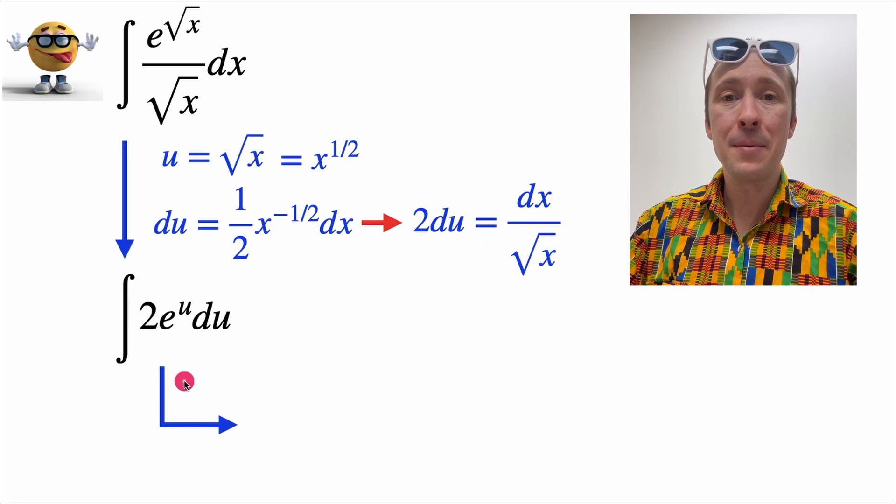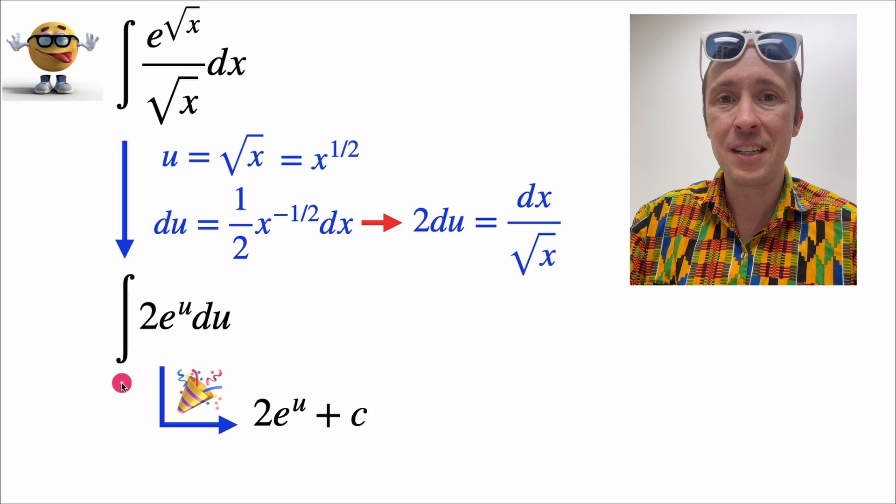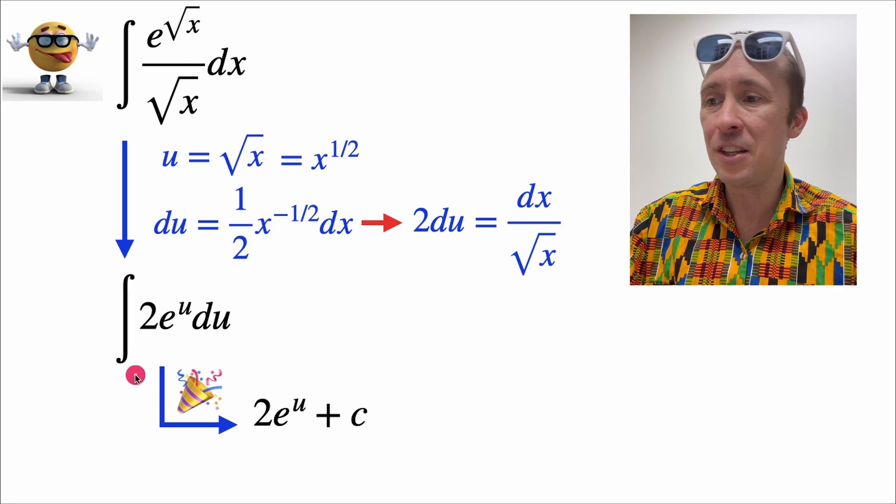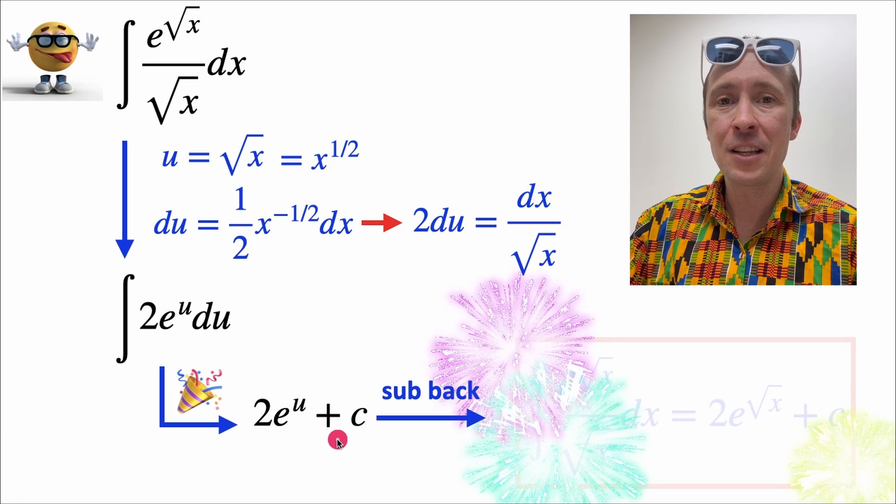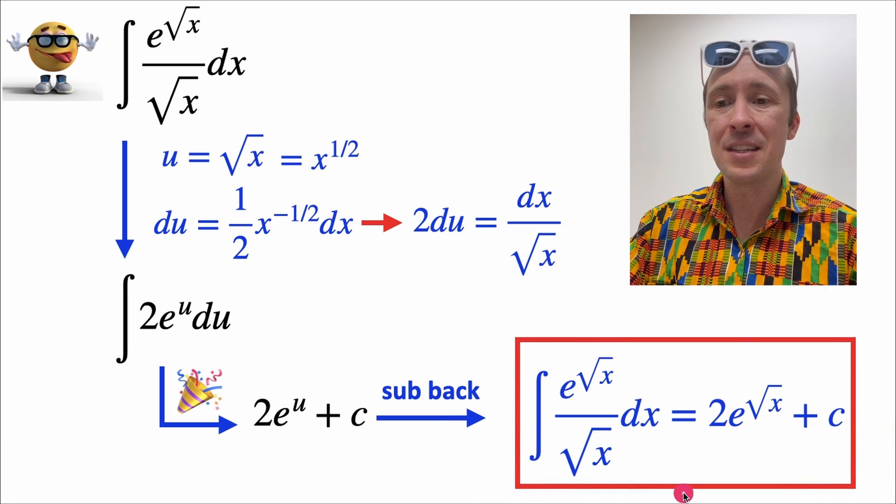And at this point, we can party on, because this is like the world's easiest integral. The integral of e to the u is itself, plus its integration constant. And for our final answer, we'll substitute back what u is in all its glory.